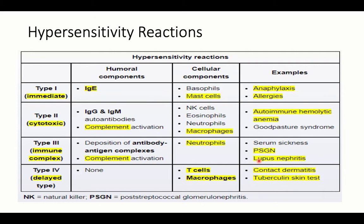The classic example of type 3 is post-streptococcal glomerulonephritis, associated with immune complex deposition in glomeruli with low C3 but normal C4 levels. The other classic example is lupus nephritis, where during lupus activity both C3 and C4 levels are low. Type 4 is the delayed-type hypersensitivity — not immediate, with delayed onset, mediated by cell-mediated immunity with no role for humoral immunity.